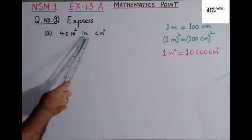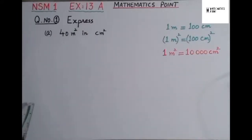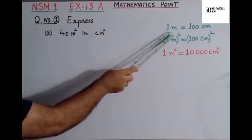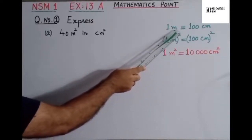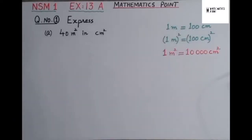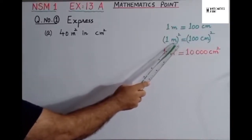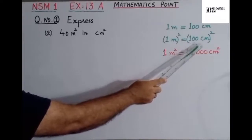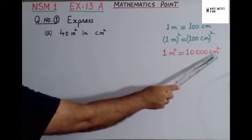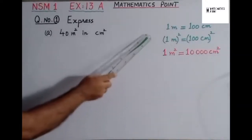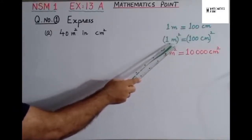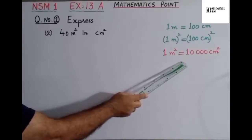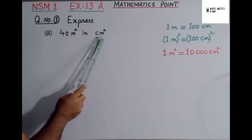In question number 1, Part A, we have to express 40 meter square in centimeter square. We know the formula from previous classes: 1 meter is equal to 100 centimeters. If we square both sides, we get 1 meter square is equal to 100 × 100 = 10,000 centimeter square. We will use this formula to express 40 meter square in centimeter square.